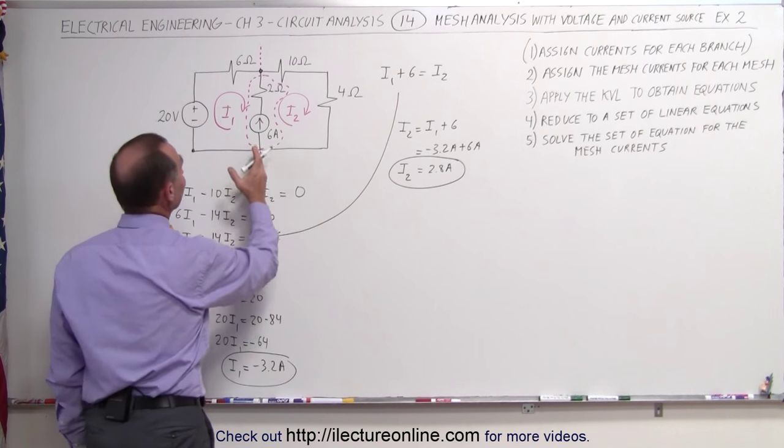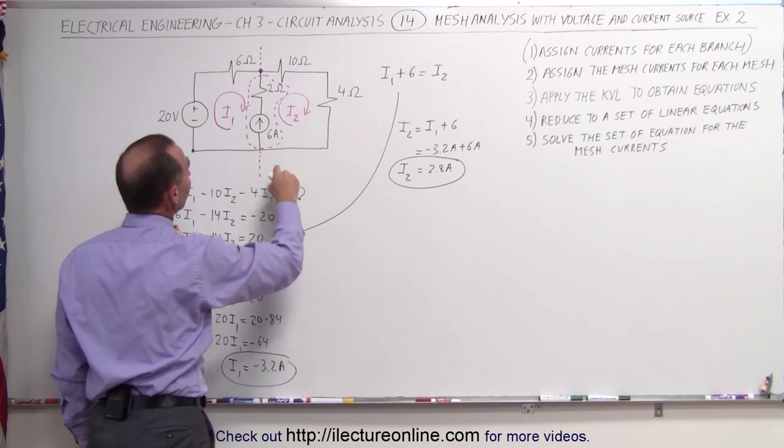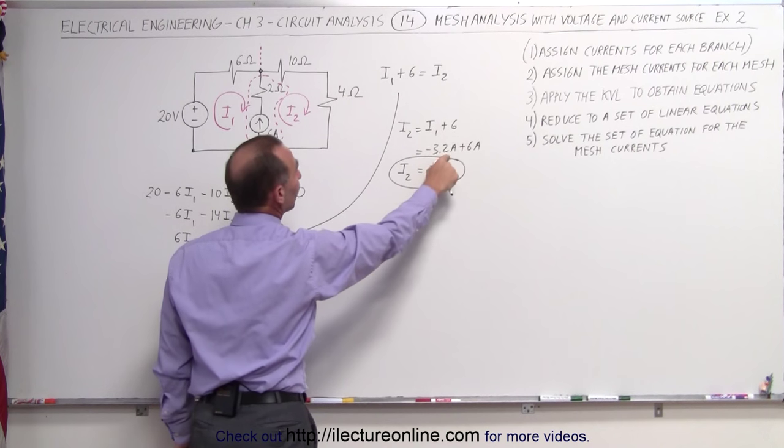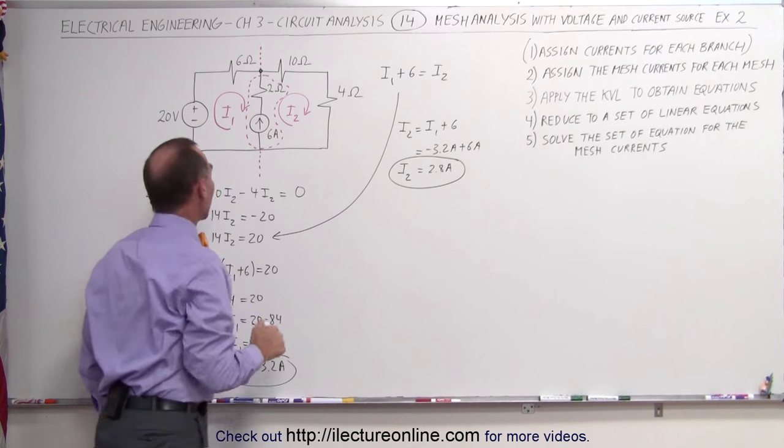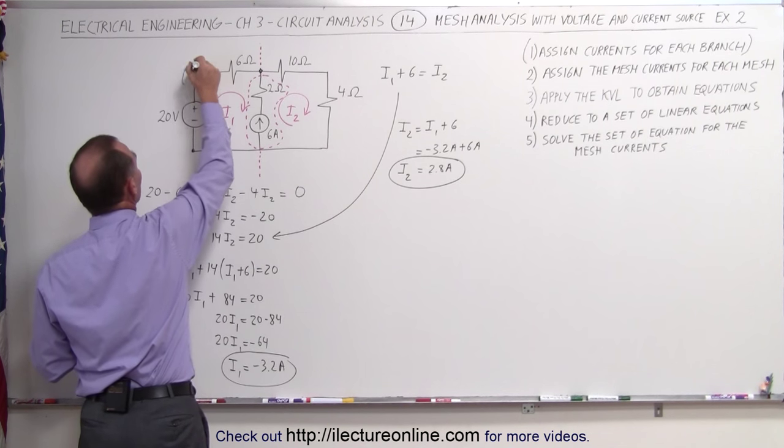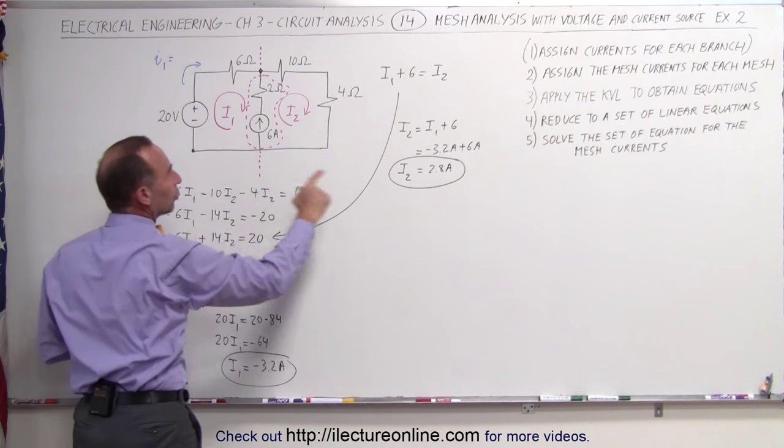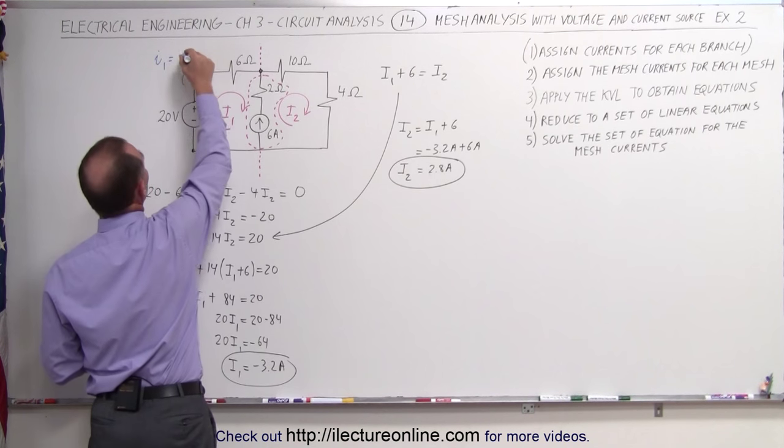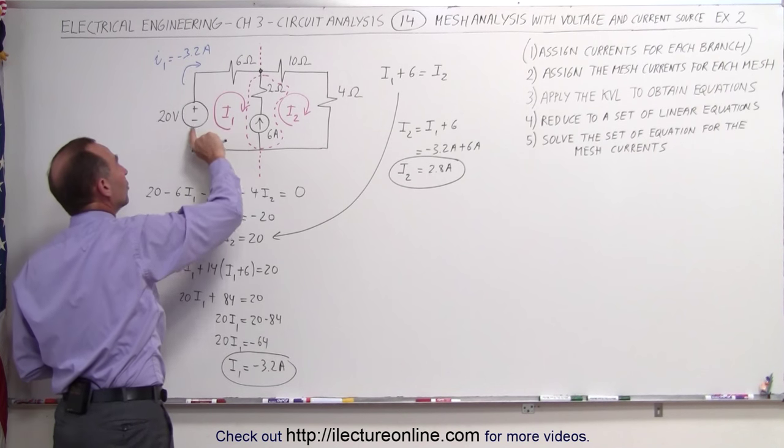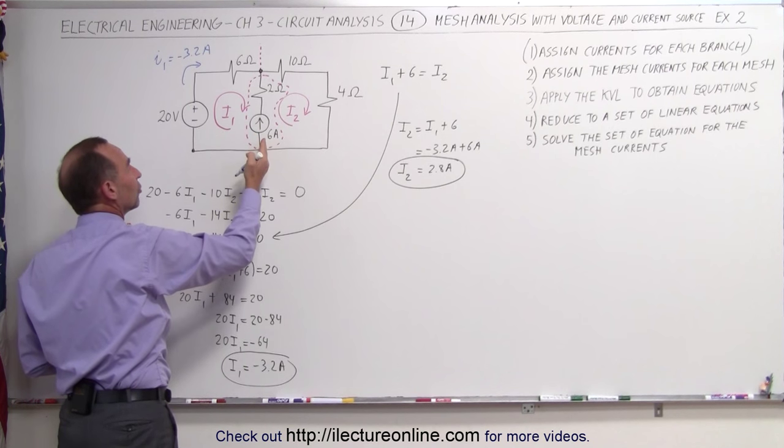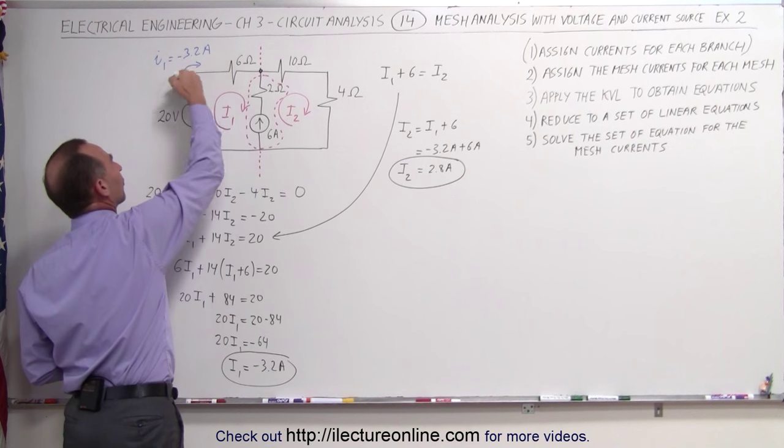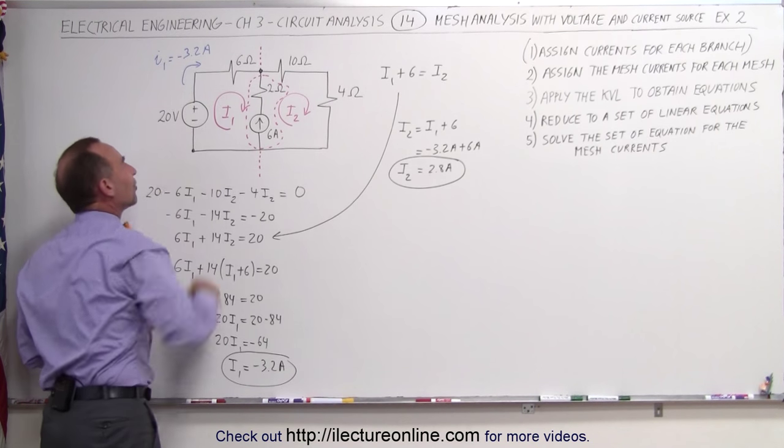I know that the current in the center branch is 6 amps. Let's see if this is correct. 6 amps added to I1, which is minus 3.2 amps, should indeed add up to 2.8 amps coming around in this direction, which means that the current in this left branch here, in this direction, I1 equals minus 3.2 amps. Even though there's a voltage source that seems to drive current in this direction, the current in this branch is so large that it actually overpowers this voltage source here, causing the current to flow in the opposite direction.